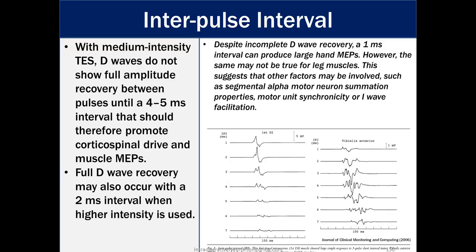Interpulse interval, again, with medium intensity transelectrical stimulation D-waves do not show full amplitude recovery between pulses until a four to five millisecond interval that should therefore promote cortical drive and muscle MEPs. So if you remember the action potential picture that we showed, if we're stimulating at two milliseconds, we're probably well into that relative refractory period. And the D-wave hasn't been able to fully recover, the next D-wave hasn't been able to fully recover. We had to stimulate just to bring into threshold and you might not get a full D-wave amplitude. Full D-wave recovery may also occur when a two millisecond interval is used when high intensity is used. So we have to actually drive that area and surrounding areas to make sure that we get an appropriate D-wave.